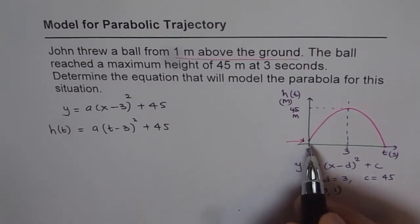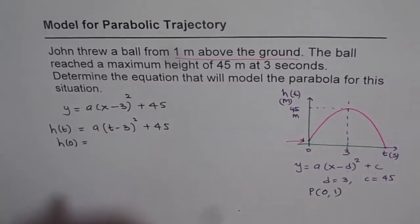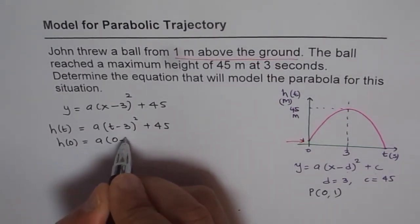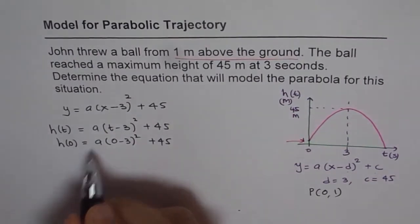And this point says that at t equals 0 that means height at t equals 0 is what? Is equal to 1. That is what it is given to us. So we will plug it in. We substitute t equals 0 here equals to 45 and then calculate the value of a.